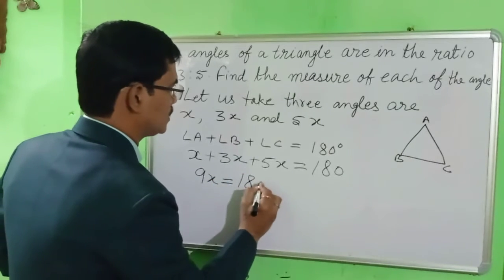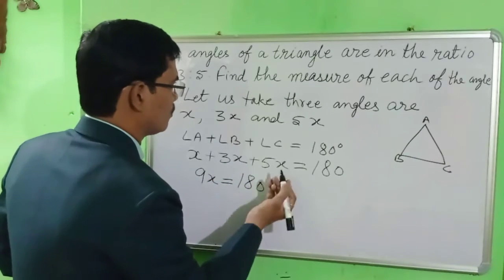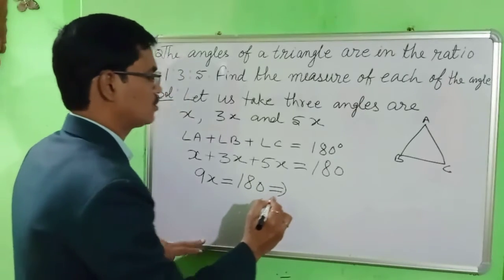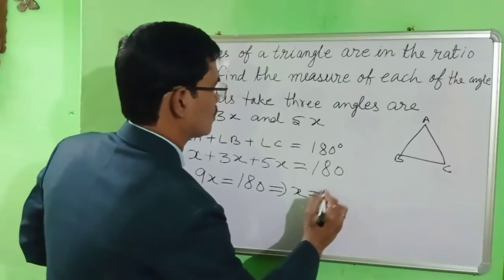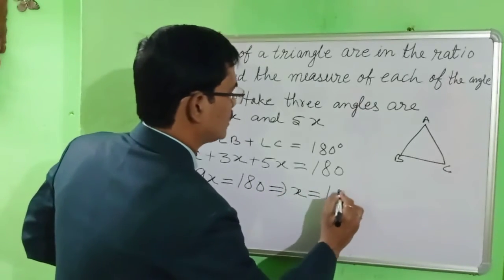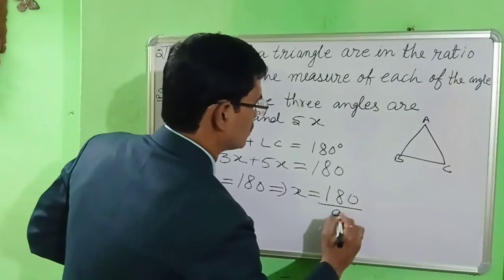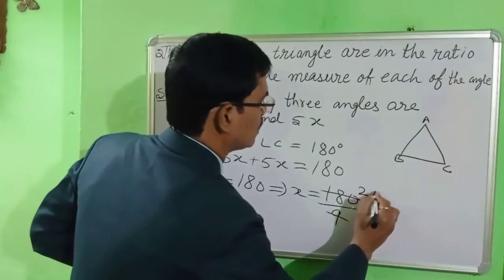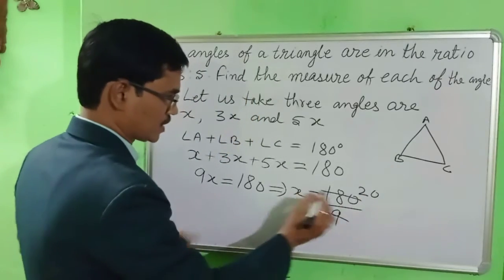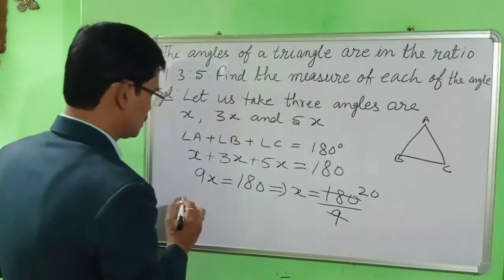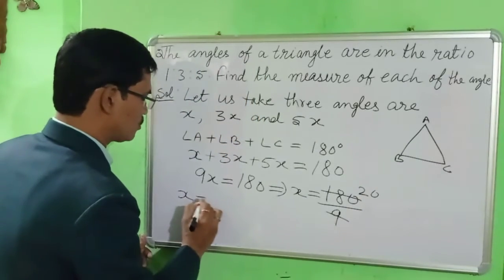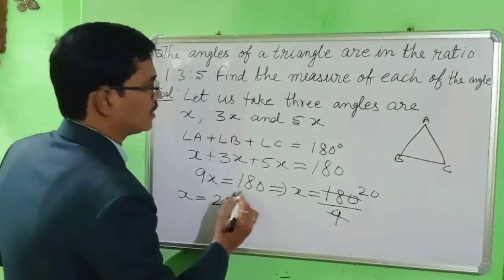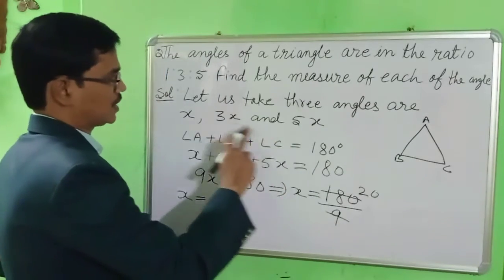So 9X is equal to 180 degrees. Therefore X is equal to 180 divided by 9, which gives us the value of X equal to 20 degrees.